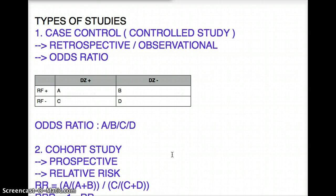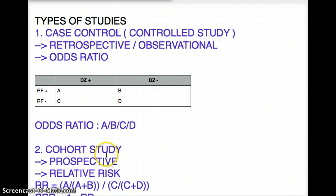I always used to get confused when questions don't directly say 'find the odds ratio' or 'find the relative risk,' but instead describe what they're trying to find in words. I found a quick and solid way to differentiate: if they're talking about case control, they're always talking about odds ratio; if they're talking about cohort study, they're talking about relative risk.